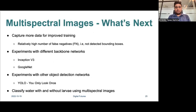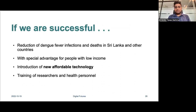In future, we plan to introduce a large multispectral dataset to detect water retention areas accurately. We intend to experiment with different backbone networks for our Fast R-CNN model and also assess other single-shot object detection models such as YOLO. We are also developing a classification model to classify water with and without mosquito larvae using multispectral images. If we are successful in this research, we will reduce dengue fever infections and deaths in Sri Lanka and other countries, with special advantage for people in low-income countries. We also introduce new affordable technology and train researchers and health personnel. Thank you for listening.